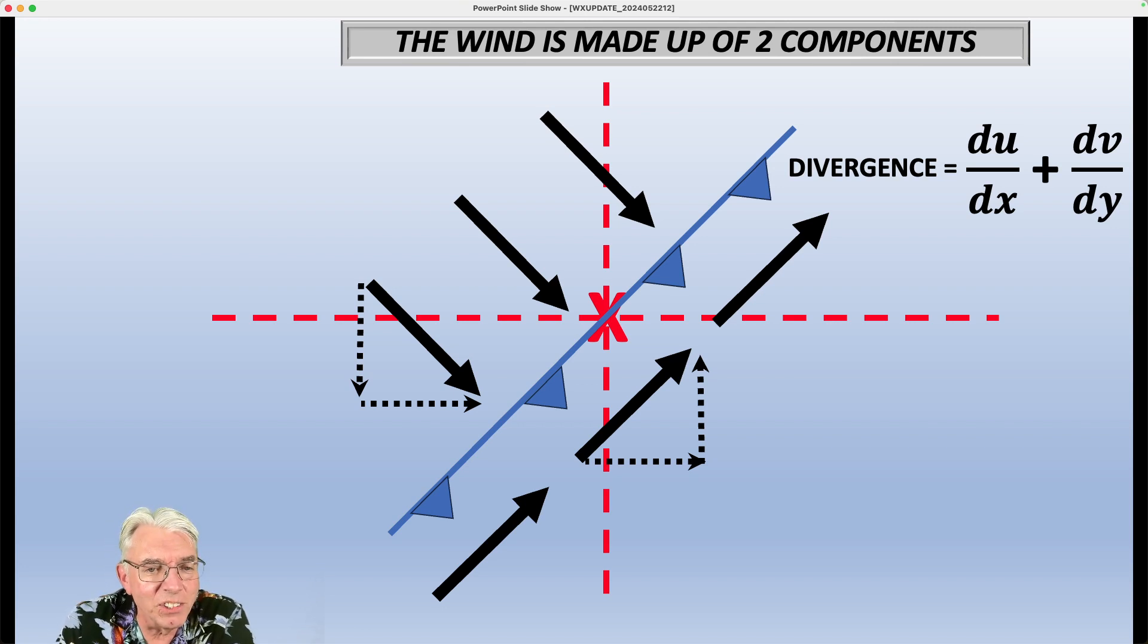And negative divergence is a long-winded way of saying convergence. Just like negative convergence is divergence. So, in this case, the divergence is negative, which means you've got a convergent wind field along the cold front, and we would expect that. And so when the air comes together, it goes up, and if there's enough moisture, you get clouds and precipitation and showers and thunderstorms and all that type of thing.